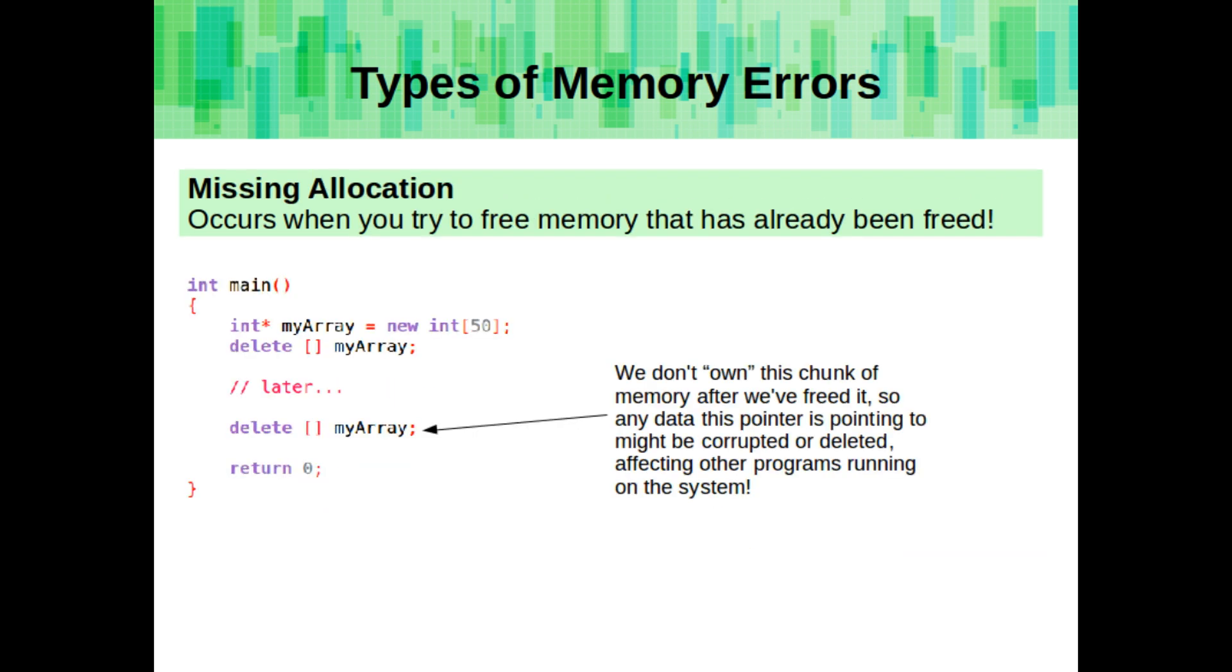Missing allocation errors occur when you try to free memory that has already been freed. So for example here, we don't own this chunk of memory because we've already freed it. So any data that this pointer is currently pointing to could become corrupted or deleted, affecting other programs running on the system.